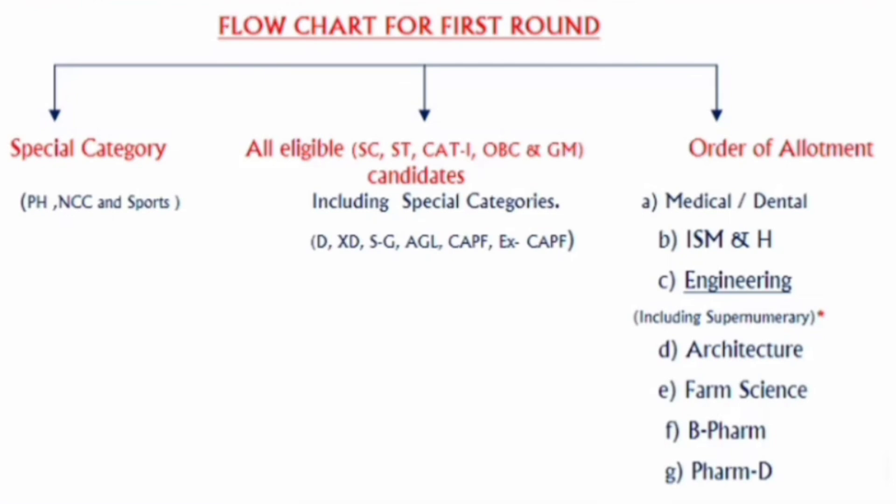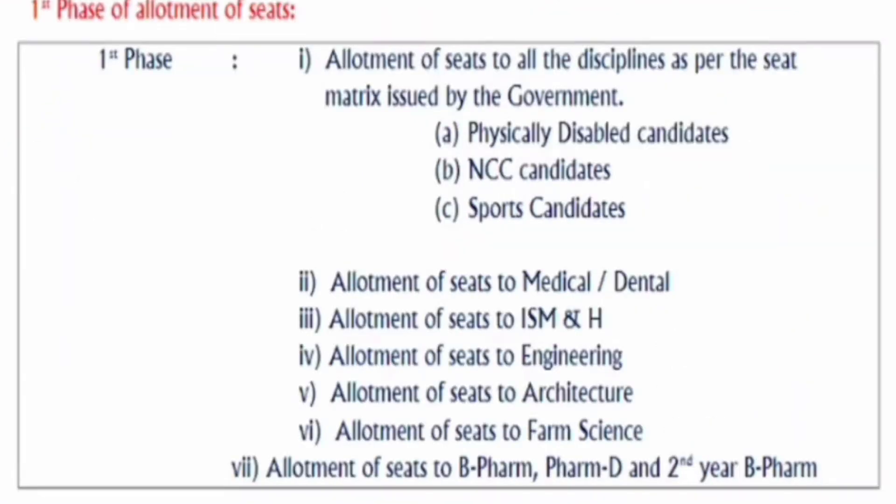The first preference is given to medical and dental seats, second is ISMH — Indian System of Medicines and Homeopathy, third is engineering, fourth is architecture, fifth is pharma science, sixth is B.Pharma, and seventh is Pharma D. This order is decided because many students apply for more than one type of course, and your option entry can include engineering, architecture, and B.Pharma course options.